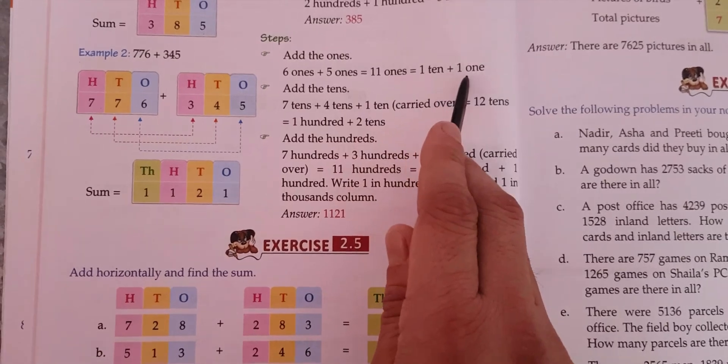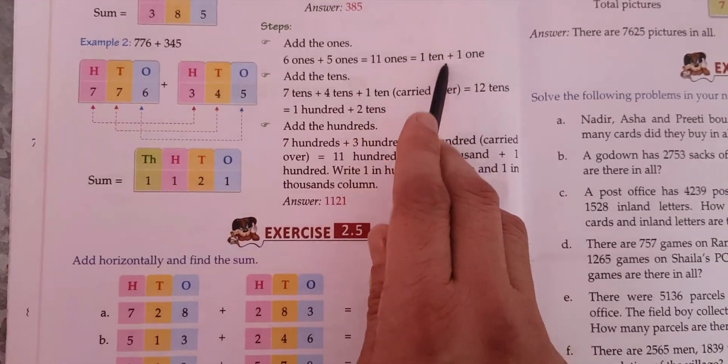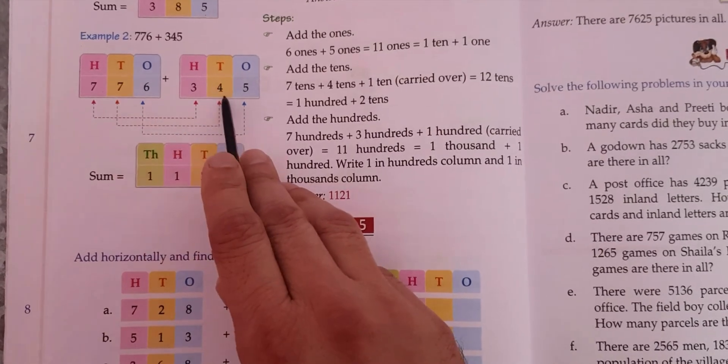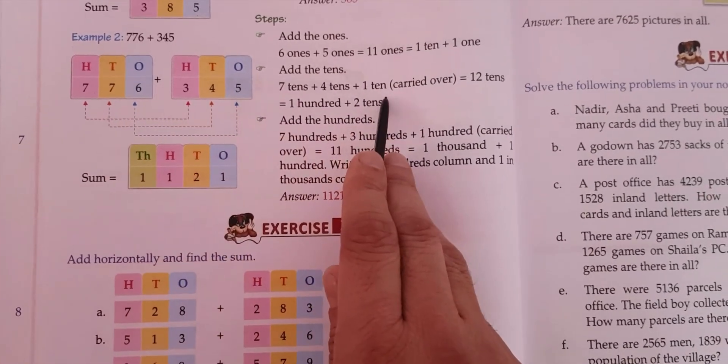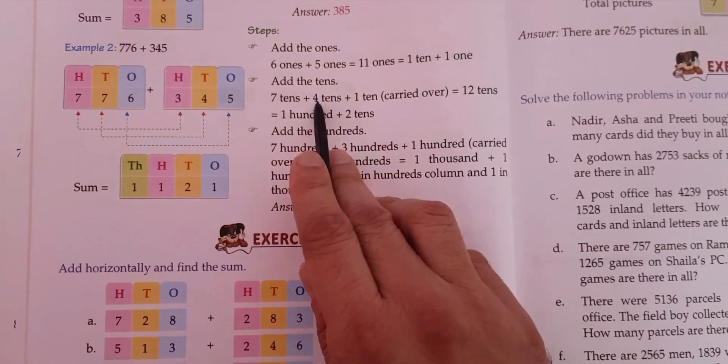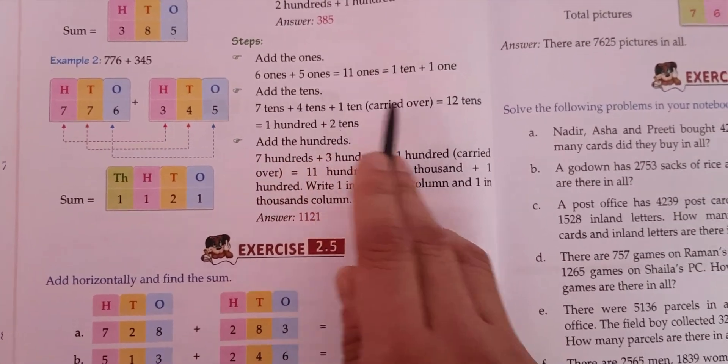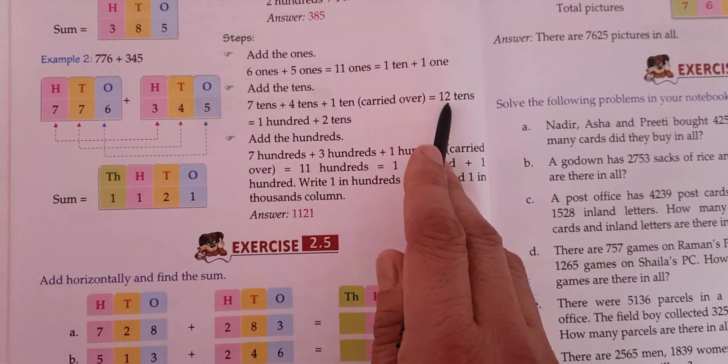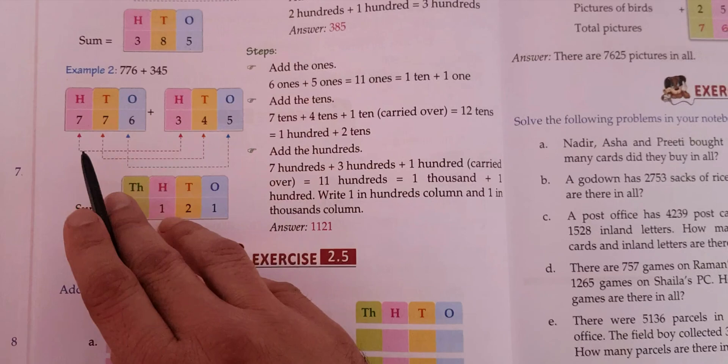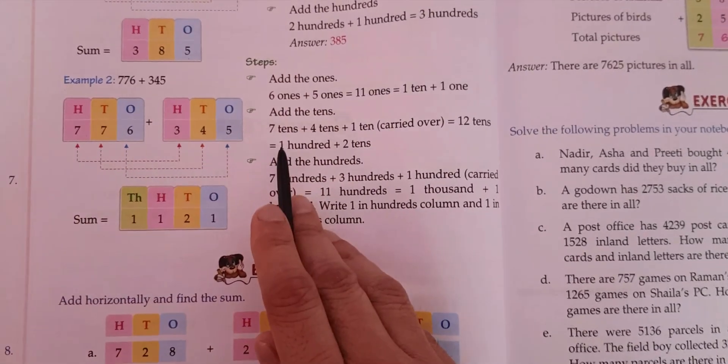So seven tens plus four tens plus one ten which is carried over from the ones becomes seven plus four, eleven. Eleven plus one is twelve tens. Again, from twelve tens, two will stay here and one ten will go to one hundred. That is, one hundred will go there and two tens will stay here.